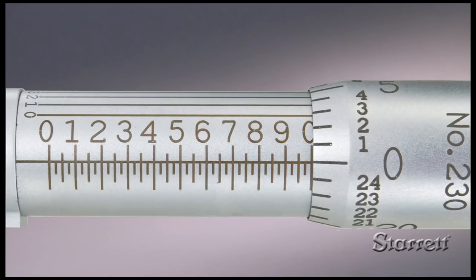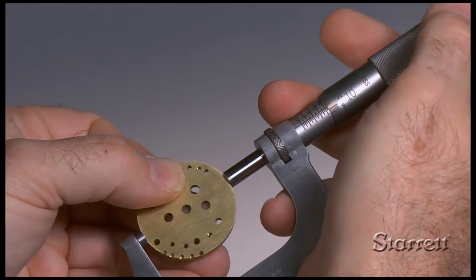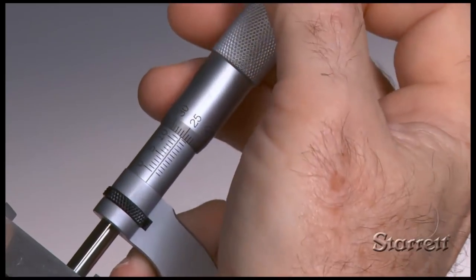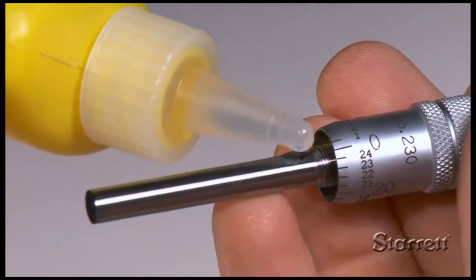How to use an outside micrometer is a four-part series. This is Part 1, Introduction and Terminology. Parts 2, 3, and 4 cover reading inch and metric micrometers, accuracy, adjustments, and maintenance.